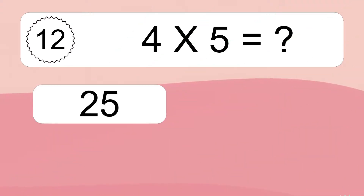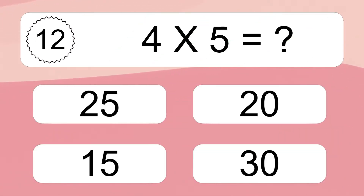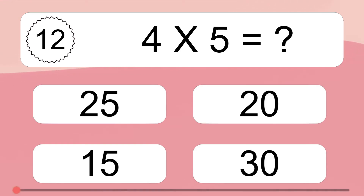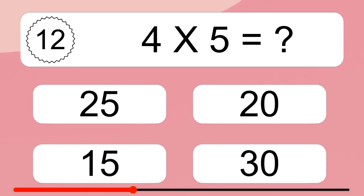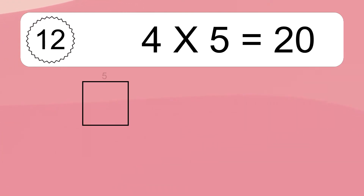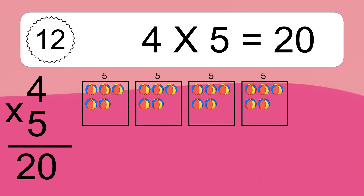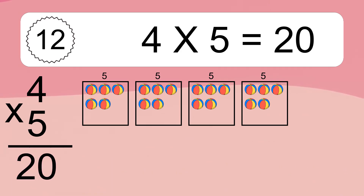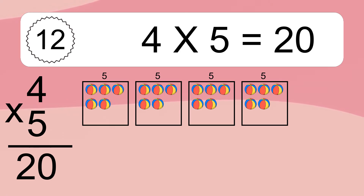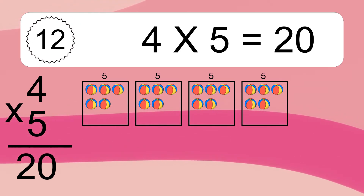4 times 5 equals what? 4 times 5 equals 20. We have 4 boxes and each box has 5 colorful balls inside. If you count all the balls in all the boxes together, you will have 4 times 5 balls. This equals 20 balls.